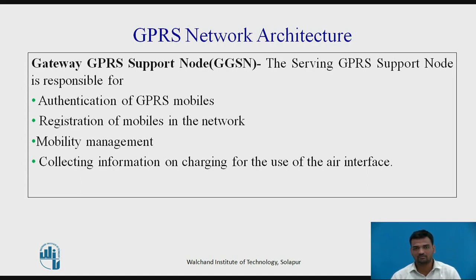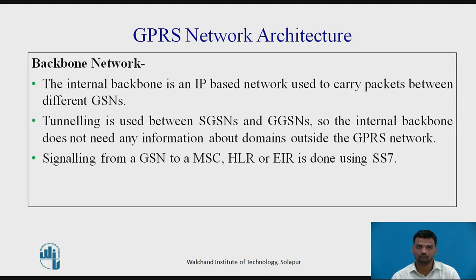The Gateway GPRS Support Node (GGSN) acts as an interface and router to external networks. It contains routing information for GPRS mobiles, which is used to tunnel packets through the IP-based internal backbone to the current SGSN. The GGSN also collects charging information related to the use of external data networks. The internal backbone is an IP-based network used to carry packets between different GSNs, and tunneling is used between SGSN and GGSN. Signaling from GSN to the MSC, HLR, or EIR is done using the SS7 protocol.